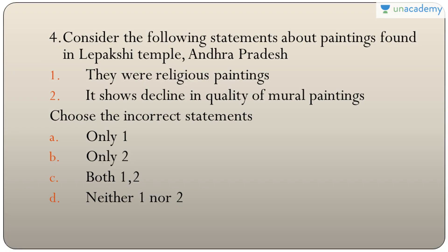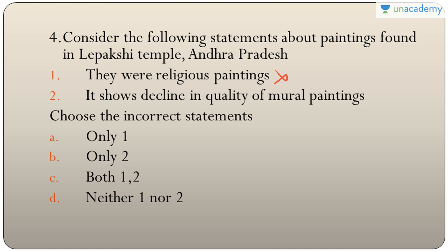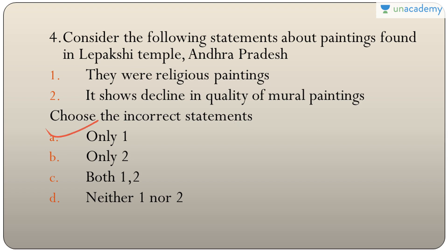Question four: statements about paintings found in Lepakshi temple in Andhra Pradesh — they were religious paintings and show decline in quality of mural paintings. Though Lepakshi is a temple, the paintings are secular, not religious — so the first statement is incorrect. The second is correct. The answer is A — only one (incorrect). There is also a complete absence of primary colors, especially blue.